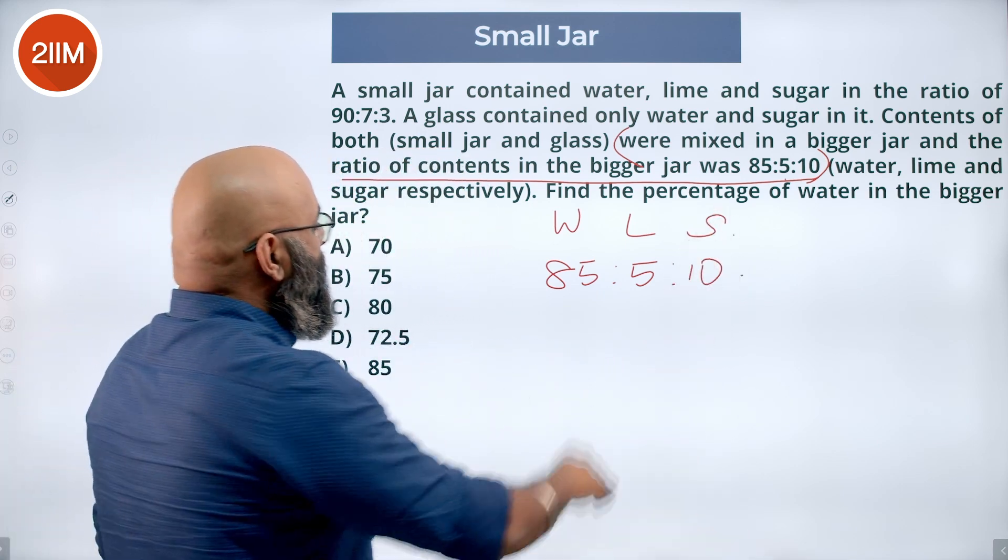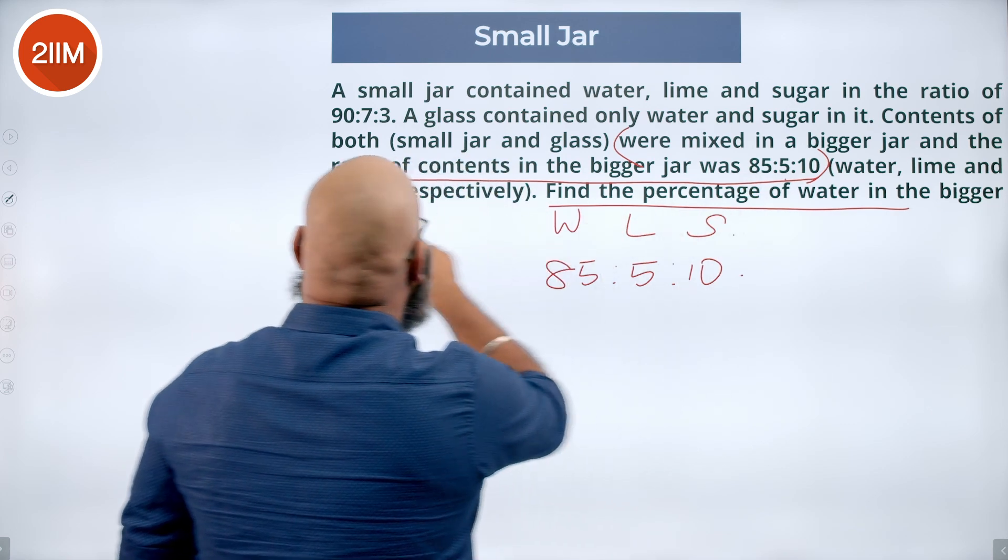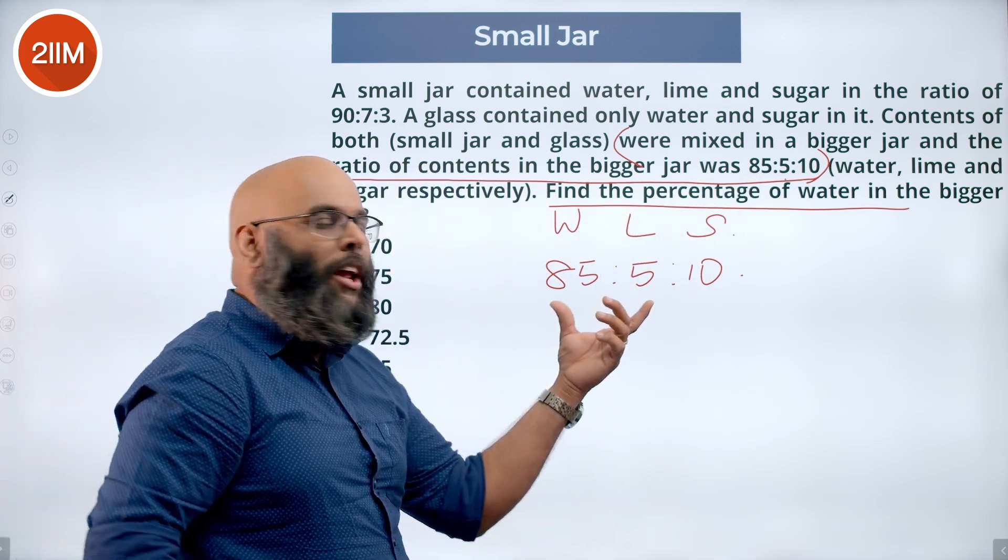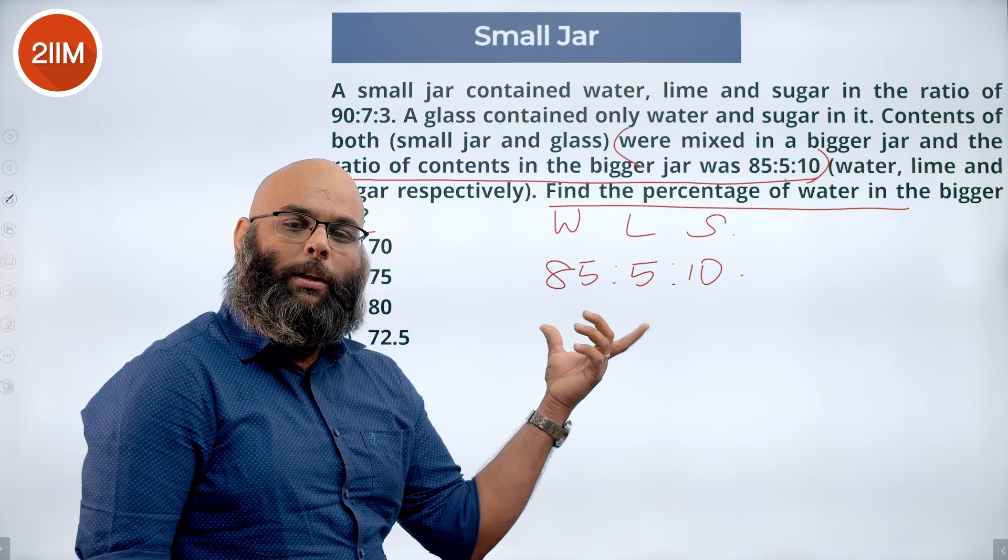Now the question is find the percentage of water in the bigger jar. We already have the ratio of water, lime, and sugar in the bigger jar.